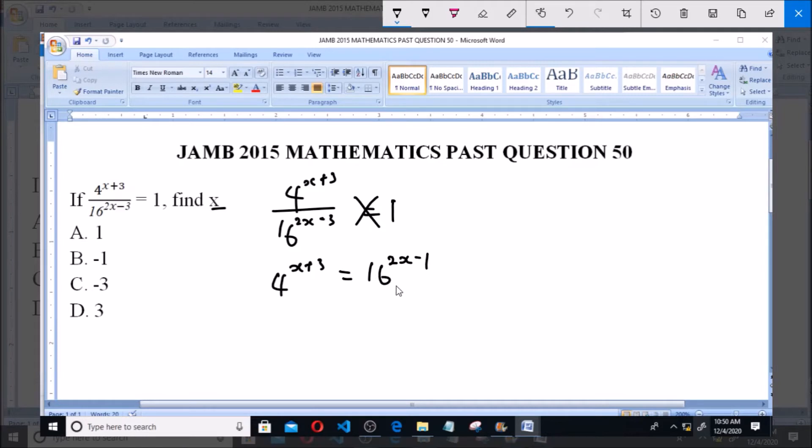Multiply by 1, and that gives us this. So from this we can have 4 raised to the power of x plus 3 equals 4 raised to the power of 2, times 2x minus 3. Now 4 raised to the power of 2 is 16, so 16 can be written as 4 raised to the power of 2.